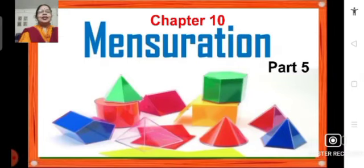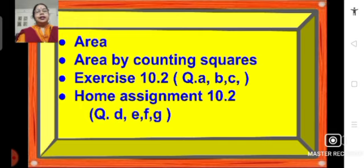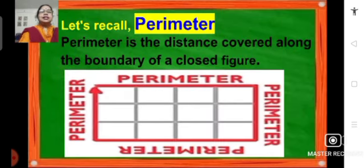Hello students, Sairam. Let's continue with chapter 10 mensuration. Today we are going to learn a new concept — area — how to find area by counting squares. Then we will solve the problems of exercise 10.2 questions a, b, and c. At the end of the session we will discuss the home assignment for you to do after class.